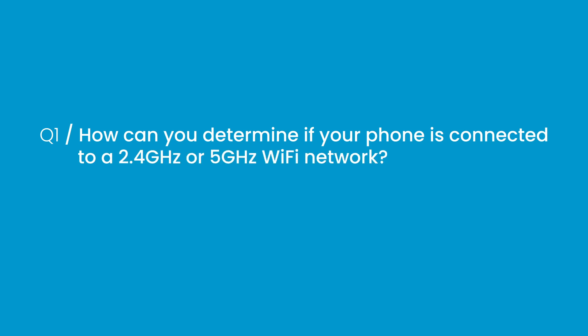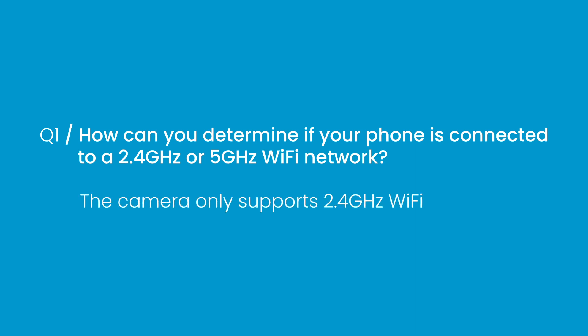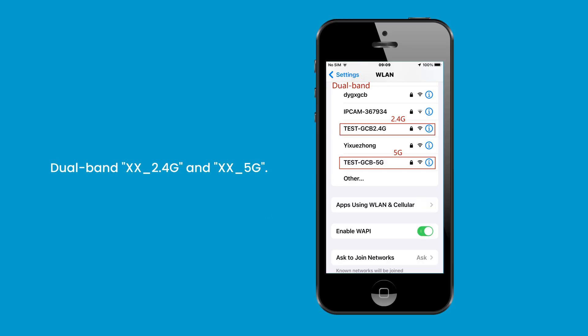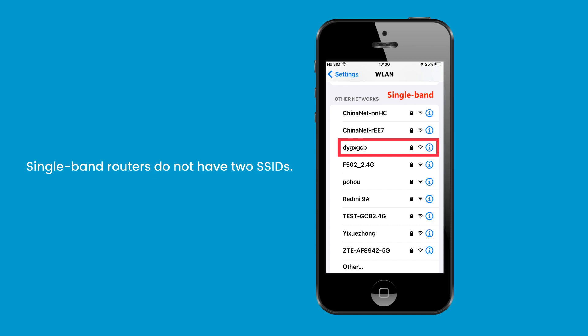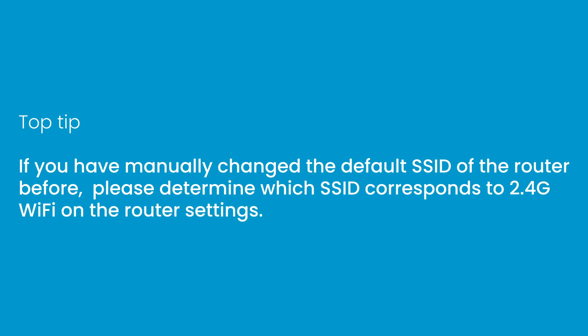Question 1: How can you determine if your phone is connected to a 2.4 GHz or 5 GHz Wi-Fi network? The camera only supports 2.4 GHz Wi-Fi. Dual-band routers typically broadcast two SSIDs, such as XX2.4G and XX5G, while single-band routers do not have two SSIDs. Top Tip: If you have manually changed the default SSID of the router, please determine which SSID corresponds to 2.4 GHz Wi-Fi in the router settings.